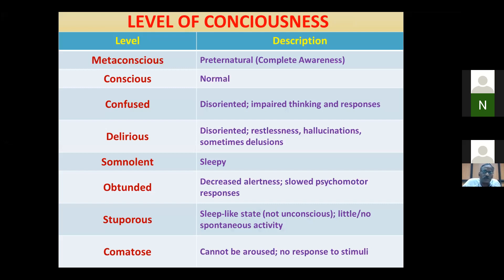Regarding level of consciousness, when the patient has normal consciousness we consider it normal. One important terminology is meta-consciousness, where the patient has complete awareness of their surroundings at all times. In normal life we don't concentrate on surroundings, but a meta-conscious patient has complete surrounding awareness, which is considered preternatural — an abnormal variety.